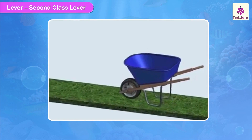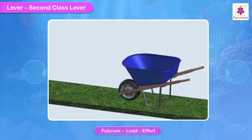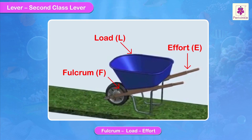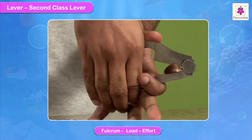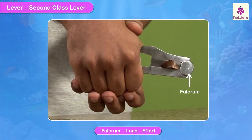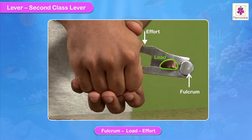Second class lever. In these types of levers, the fulcrum is at one end, the effort is applied at the other end, and the load is in between. Therefore, the load is between the fulcrum and the effort.